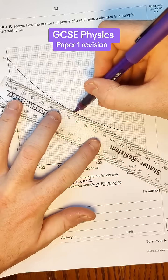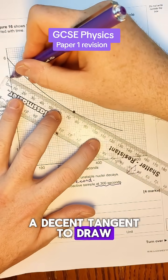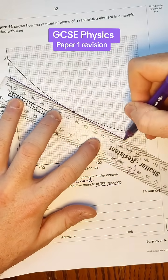There's always ranges for this kind of thing. Let's say that there. So that would be a decent tangent to draw. There we go.